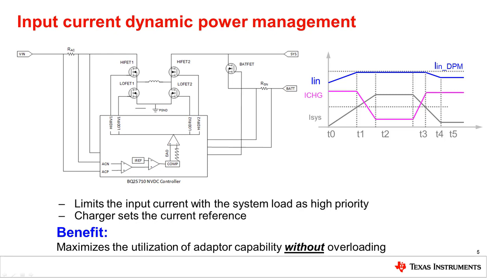In this situation, the input current DPM loop is inactive, and the device is regulating the charge current using the RSN sense resistor close to the battery's positive terminal. But as the system load increases, the total adapter current also increases until T1, where the adapter current just reaches the input current limit. At this point, the input current DPM loop becomes active. The INDPM loop measures the adapter current using the differential voltage across the RAC adapter sense resistor. Since the value of this current sense resistor is known, the voltage drop across it indicates the current being drawn from the adapter. This current is fed into an error amplifier that compares the measured current to a reference value and modifies the duty cycle of the buck-boost regulator accordingly. The current reference used in the error amplifier is generated from the input current register setting, so the feedback loop regulates the adapter current to this level.